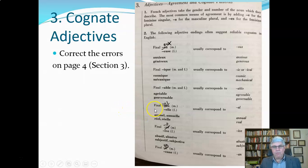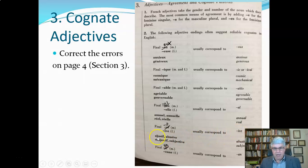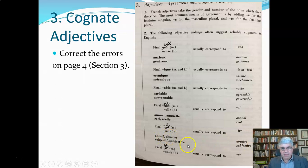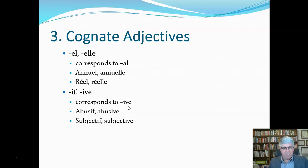Here's another typo: words that end in EL for the masculine, or ELLE for the feminine, usually correspond to AL. Like 'annuel' and 'annuelle' for masculine and feminine is 'annual.' 'Réel' or 'réelle' would be 'real.' And if it ends in IF (masculine) or IVE (feminine), it usually corresponds to IVE — like 'abusif/abusive' becomes 'abusive,' and 'subjectif/subjective' becomes 'subjective.' The final typo is words ending in EN or ENNE usually correspond to AN.